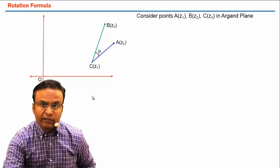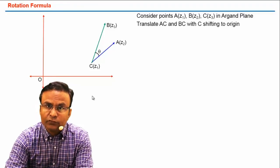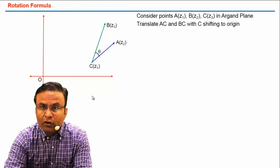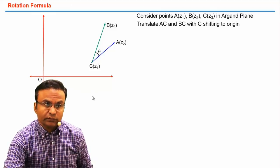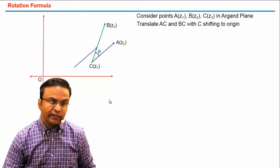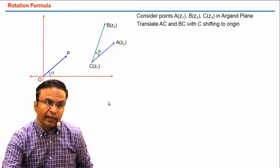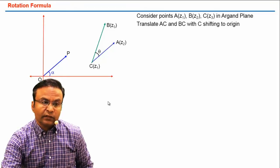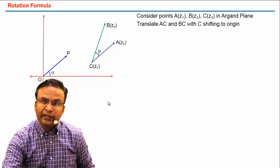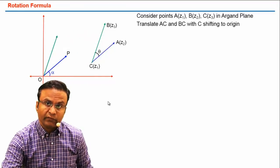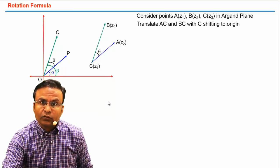Now let's translate AC and BC to the origin, with point C shifting to origin. Translation means shifting of an element without rotation — now we are taking point C to origin. So we have AC length translated like this, with C at origin and point A shifted to point P. The angle OP makes with the x-axis (real axis) is alpha. Similarly, let's translate length BC — we are not rotating, just shifting; the length remains the same — point B now shifted to point Q.